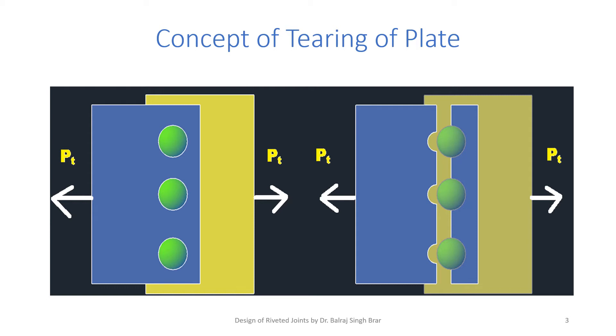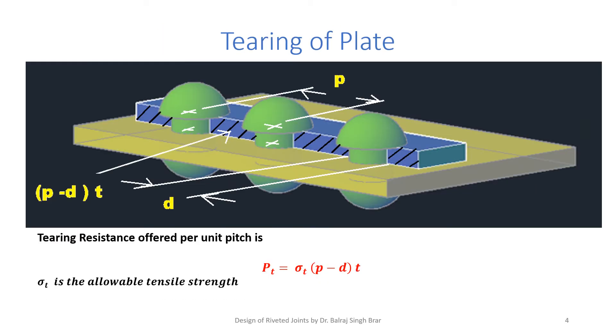The plates get torn along the pitch line or the gauge line, and the tearing is shown in the figure. This is known as the tearing of plate in a riveted joint. In this view, we have shown that when the upper plate got torn, it got torn at this cross section, which is shown as section plane.